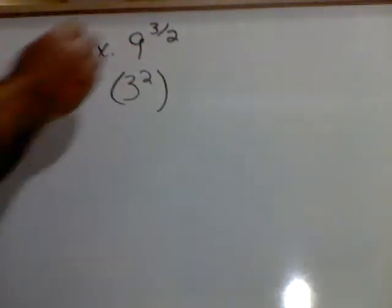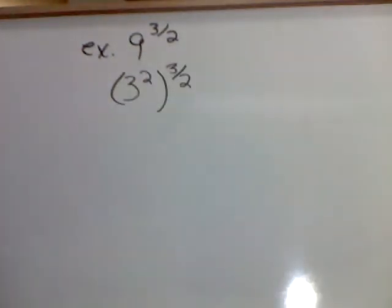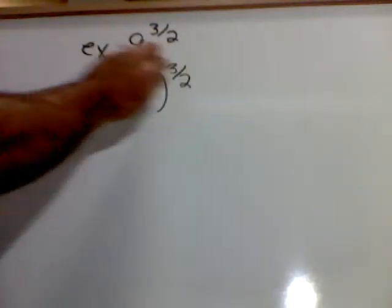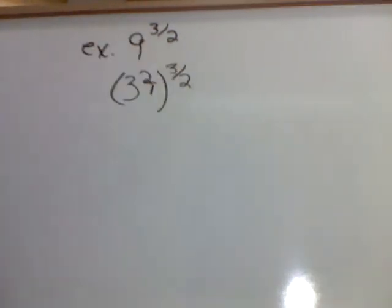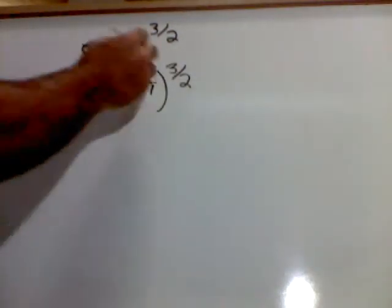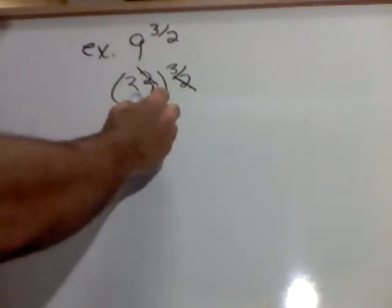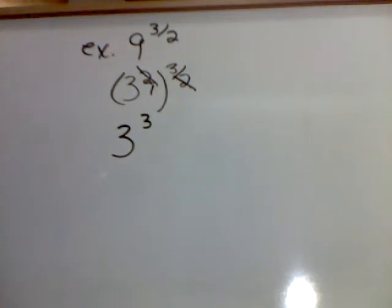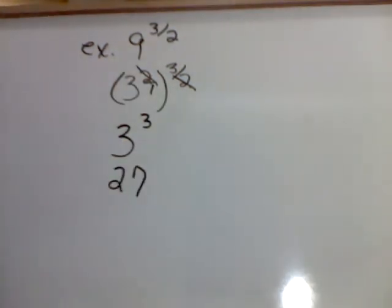But now I still have my exponent of 3 halves sitting out there. Well, if you know anything about multiplying, I'm able to put a 1 under the 2 and now, notice as I cancel the 2's out, what's left is 3 to the third power. And y'all, 3 to the third power is 27.